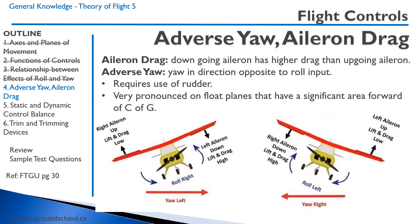This phenomenon is very pronounced on float planes that have a significant area forward of the center of gravity. That area forward is the float, and so the vertical stabilizer is less effective than it would be on a wheel airplane.